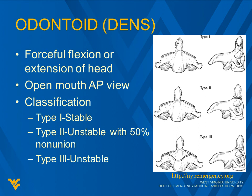The odontoid, or dens, fractures are classified as type 1, 2, and 3. Type 1 goes through the top part, type 2 through the base, and type 3 extends down into the body. They result from forceful flexion or extension of the head. An open-mouth AP view is especially helpful, but we're typically getting a CT scan. Type 2 and 3 are unstable; type 2 has a 50% non-union rate, which is a pretty poor prognosis.